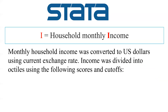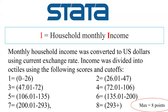For income, monthly household income is converted to US dollars using the current exchange rate. Income is divided into octiles using the following scores and cutoff points: one means $0 to $26, two means $26 to $47, three means $47 to $72, and similarly eight means $200 or above. If the monthly income is $293, then the score will be eight — the maximum eight points.